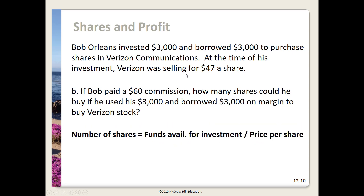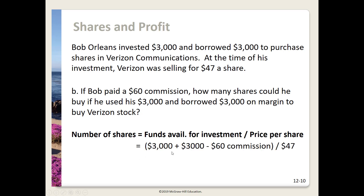In part B, it's a slightly different scenario. If Bob paid a $60 commission and used both his $3,000 of personal money and borrowed $3,000 on margin to buy Verizon stock, we total up all funds available. We take $3,000 plus $3,000 minus the $60 commission, then divide by the price per share of $47. Simplifying the numerator gives $5,940, and dividing by $47 we get 126.4 shares.